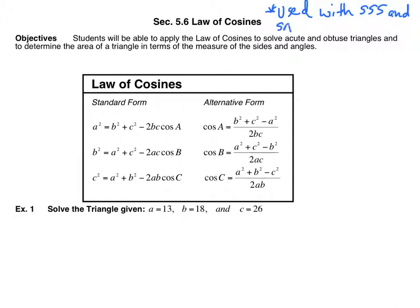Law of Cosines is also used with SAS, when the angle is included in between the two sides given — then you don't have the side opposite. So again, you can't use Law of Sines. The implication is: use Law of Cosines when you don't have the side opposite the given angle.